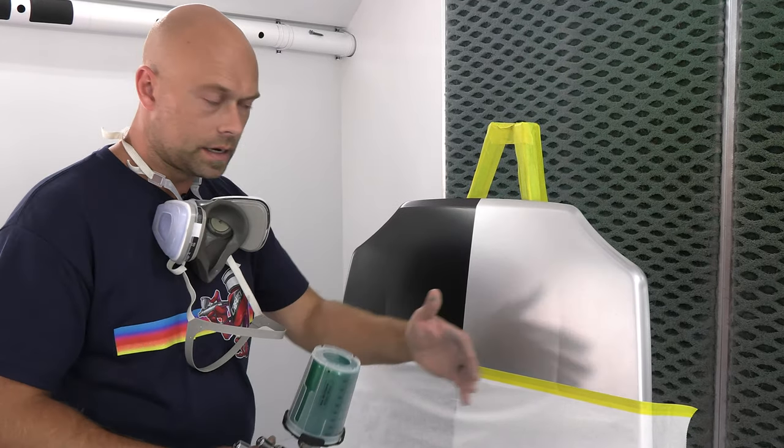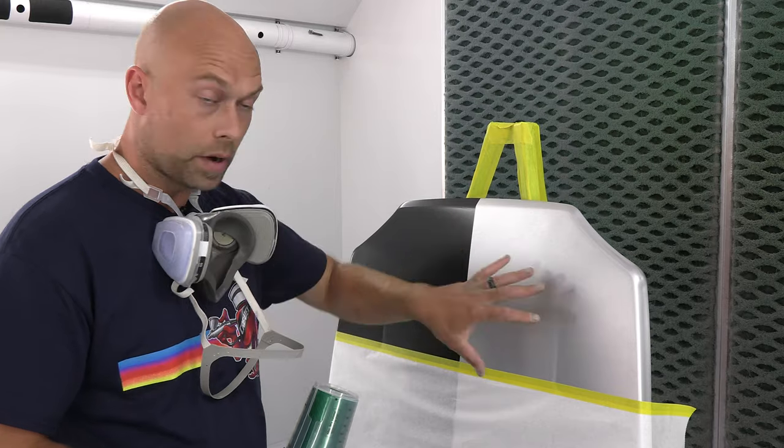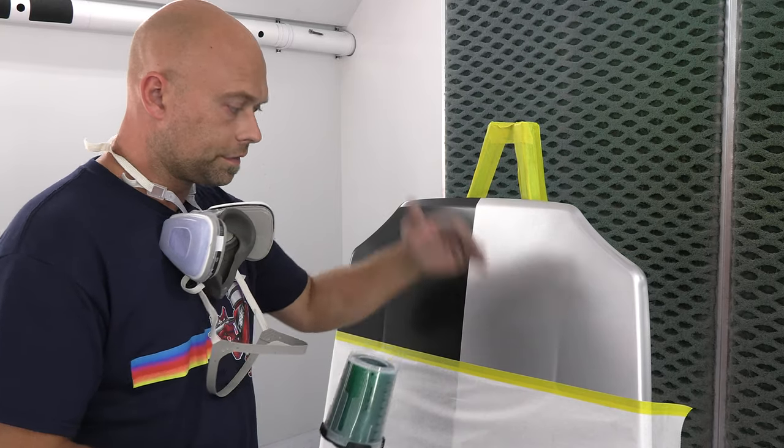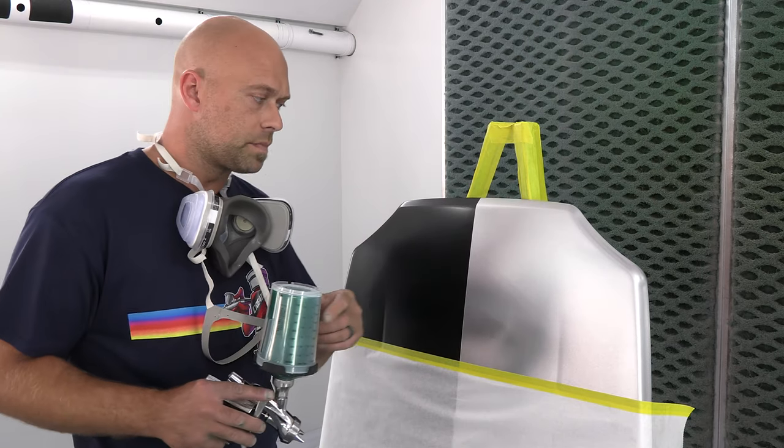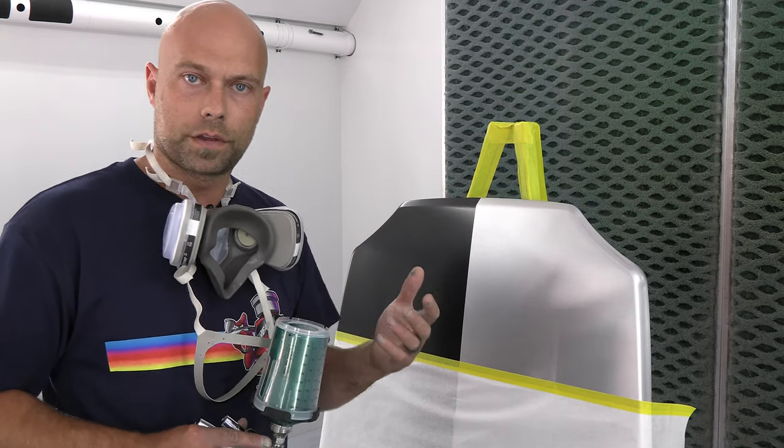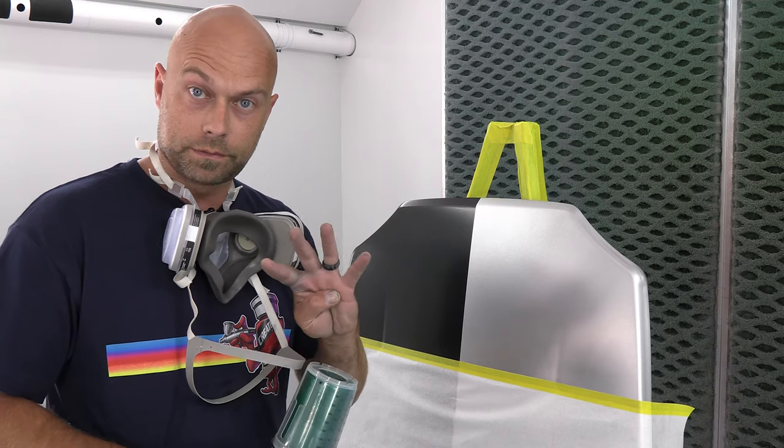But that's what we're doing here, just to highlight not only what it looks like over black and over a bright metallic base, but the flake size and the same exact color. So I have my emerald green candy. It is mixed four to one with our 4050, so four parts 4050 to one part emerald green.